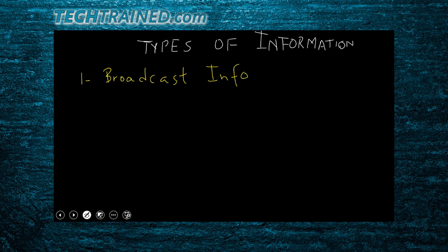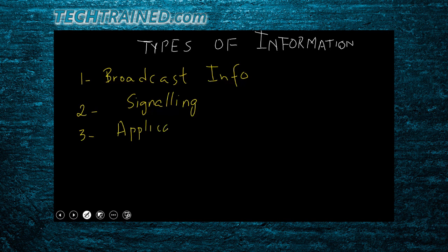What else can your UE receive? Another type is signaling, because your phone needs to receive control signaling from the eNodeB and core network. Focusing on the RAN side, let's consider RRC signaling. And we cannot forget application data — since we use different apps on our phones, there needs to be data coming for those apps. So that's application data, which is the end-user or consumer data.